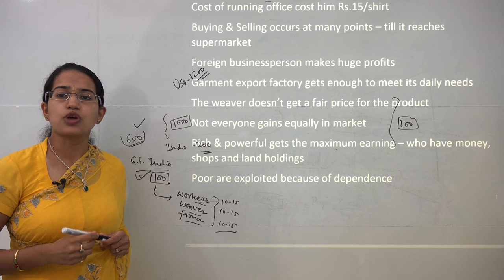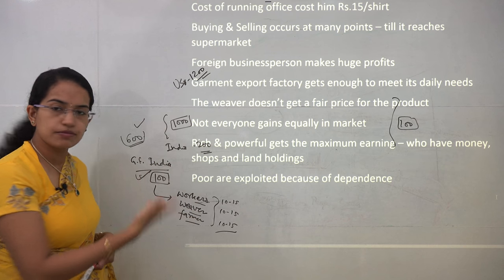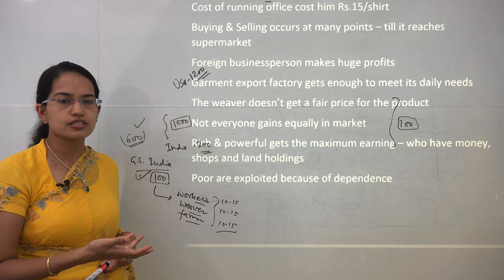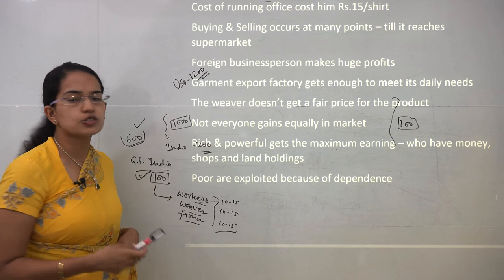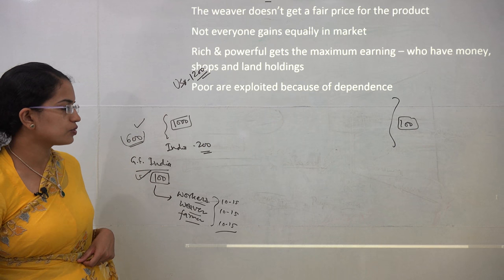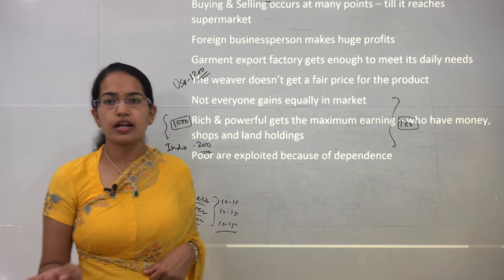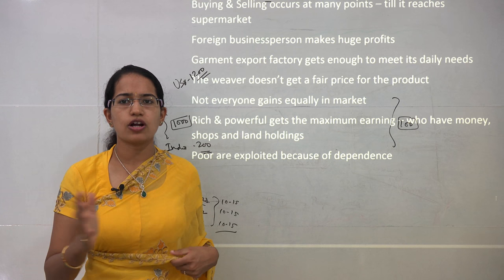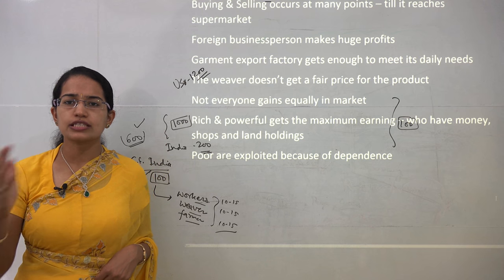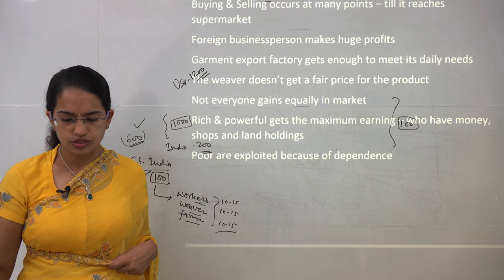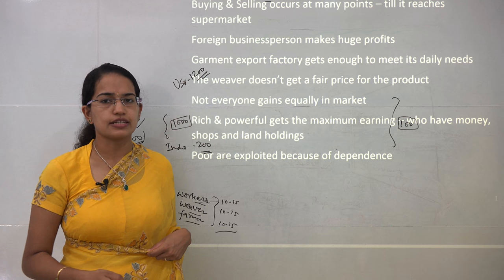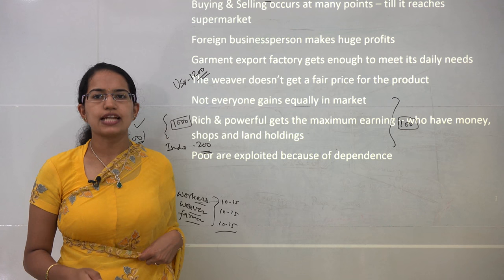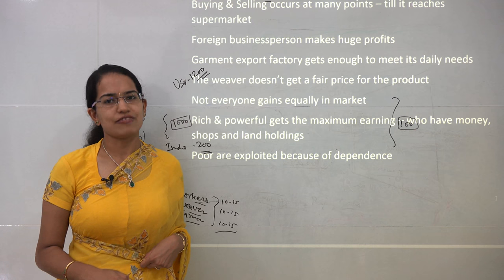The actual producers — farmers growing cotton, weavers weaving cloth, and workers in the garment industry — do not receive fair compensation for their inputs and are exploited due to their high dependence on the system. To work around this, numerous cooperatives and companies are emerging. This covers the topic of 'Shirt in the Market', which aims to help students understand the actual state of economics in society and the disparities that exist. The final chapter of Political Science Class 7 will be covered in the next lecture, followed by NCERT Class 8.